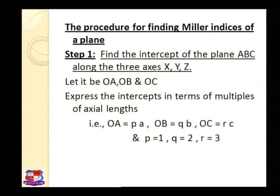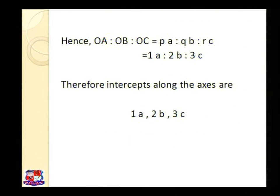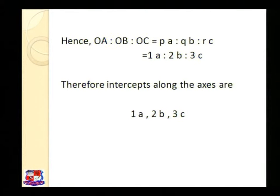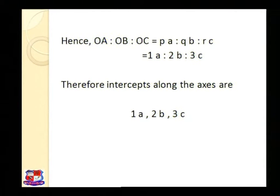So this is the first step. OA to OB to OC is equal to PA to QB to RC. By substituting the values of P, Q and R, it becomes 1A to 2B to 3C. Therefore the intercepts along the axes are: for X axis it is 1A, for Y axis it is 2B, and for Z axis it is 3C. So we are taking this as an example; 1A, 2B and 3C are the intercepts.